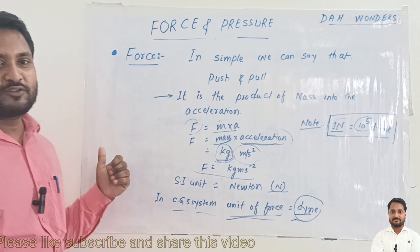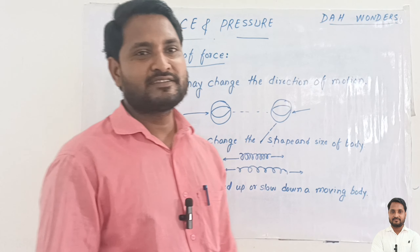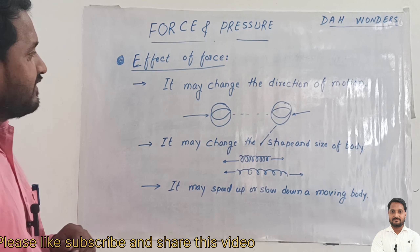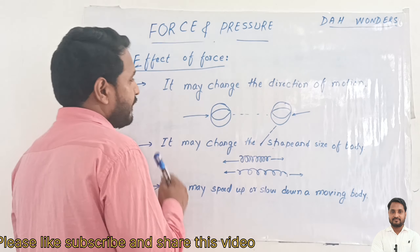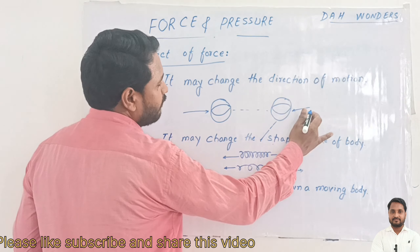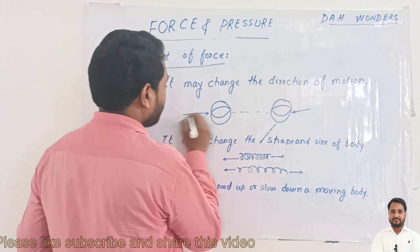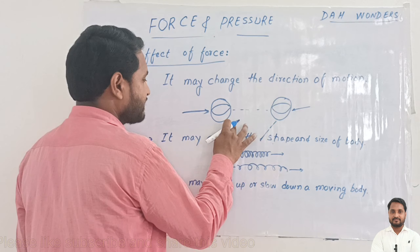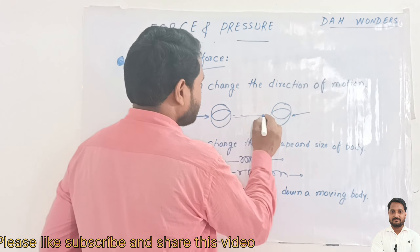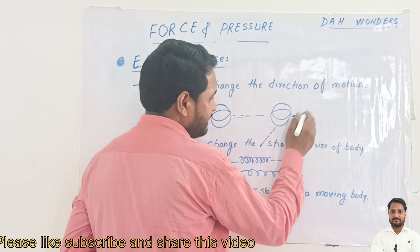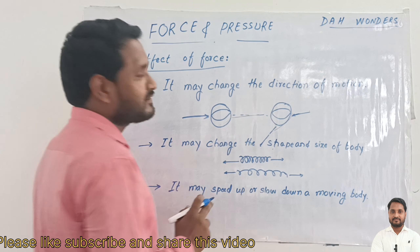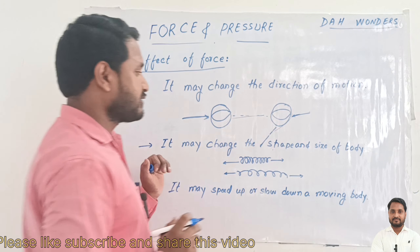Next topic is the effects of force. The first effect: force may change the direction of motion. We can apply force on any movable object and the object will change its direction of motion. For example, when we apply force on a ball, the ball moves forward, and when an opponent player hits the ball, the ball turns to the side — this is changing the direction of motion.